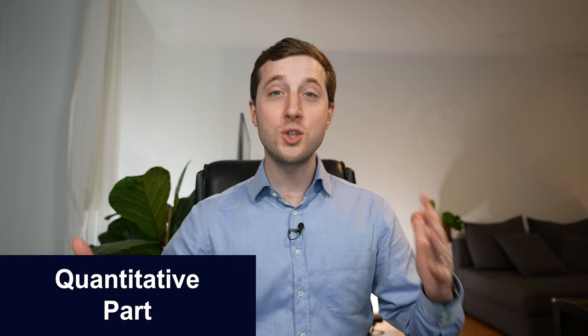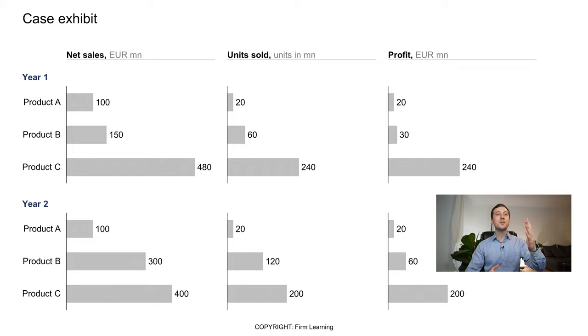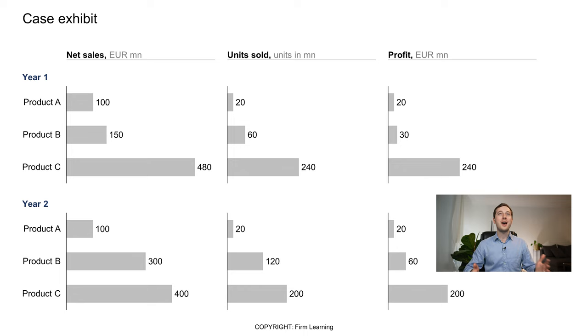Next is the quantitative part of the interview. In consulting you work with numbers a lot, and the interviewer will look for whether you're comfortable with calculations. My first tip: before you even get a math question, try to show you're comfortable with the numbers. Staying with this example, it would be strong to calculate the unit price without even being asked — for instance, product A: 100 over 20 gives a unit price of 5 euro.